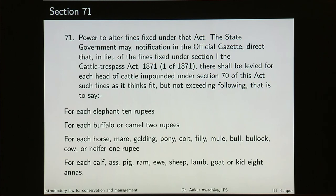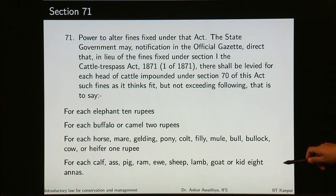Section 71 says power to alter fines fixed under the act. The state government may, by notification in the official Gazette, direct that in lieu of the fines fixed under the Cattle Trespass Act 1871, there shall be levied for each head of cattle impounded: for each elephant 10 rupees, each buffalo or camel 2 rupees, each horse or mare or gelding 1 rupee, each calf 8 annas. These provisions have not been amended for quite a while and are not of much practical utility today.